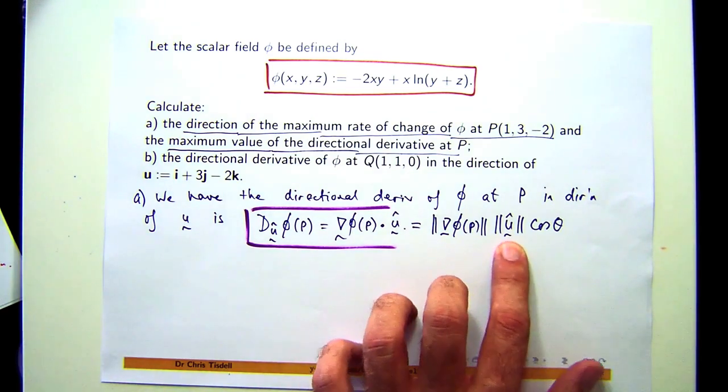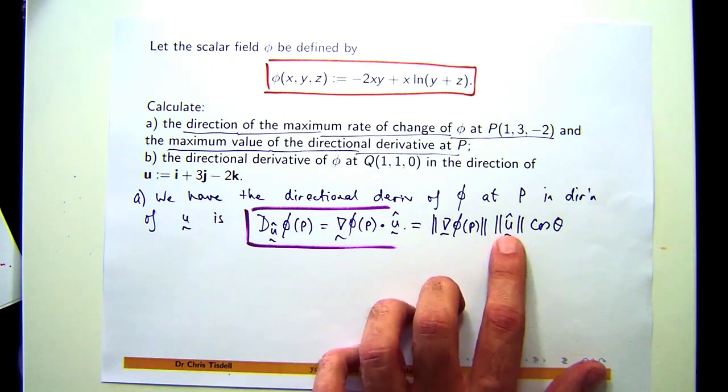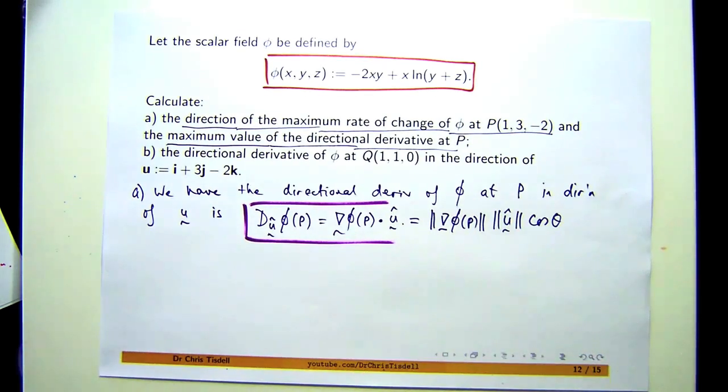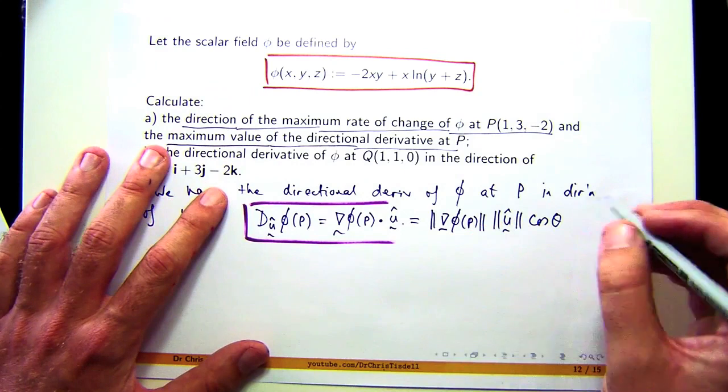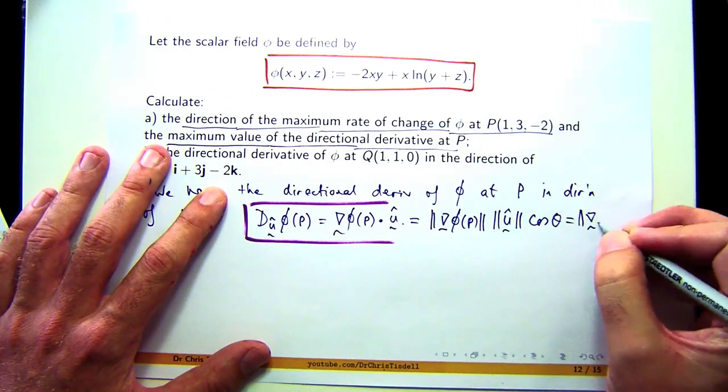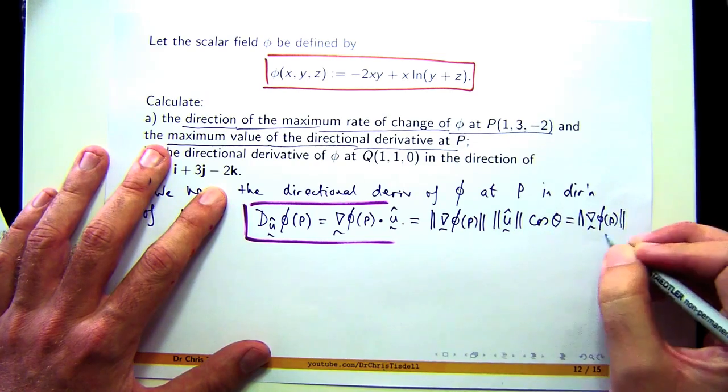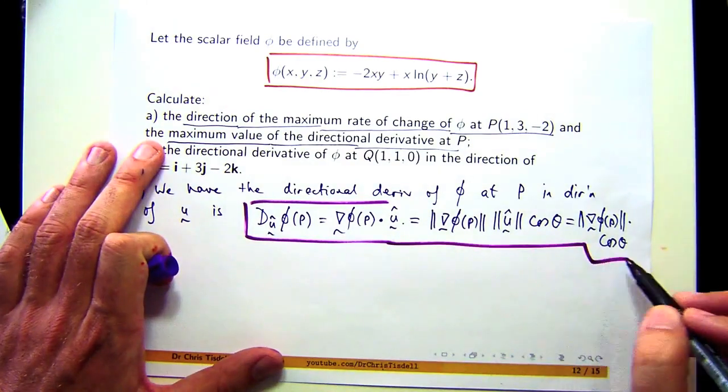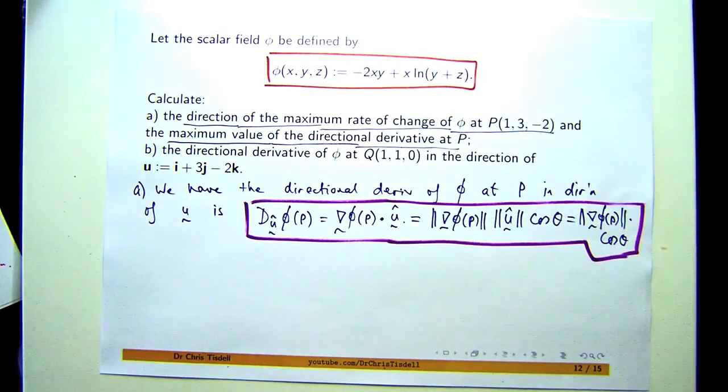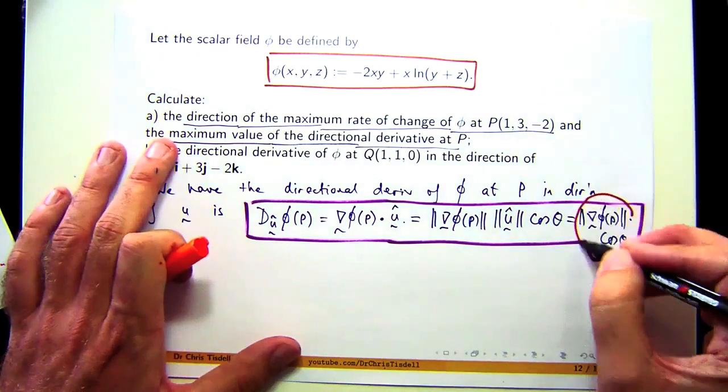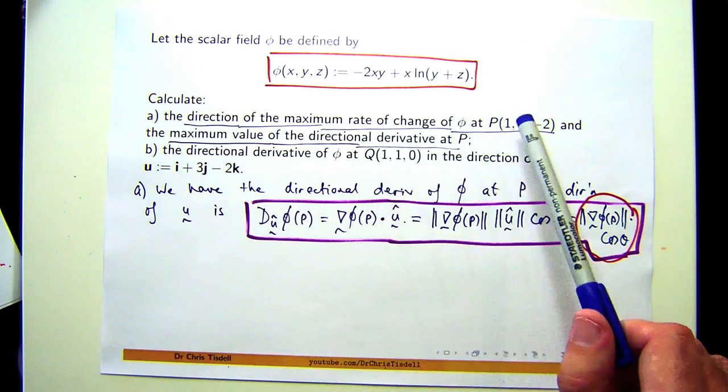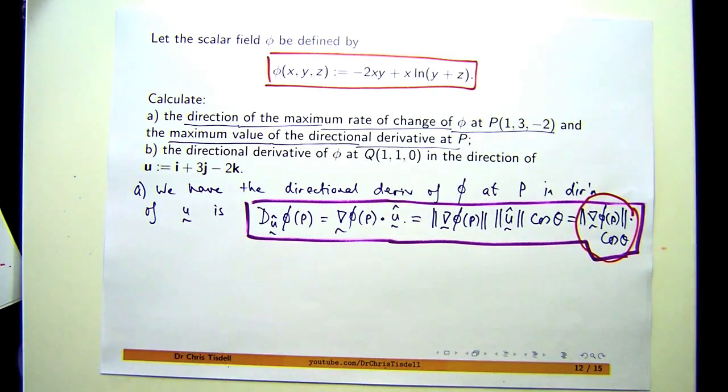Now, if I take the length of a vector that has length one, a unit vector, this is going to disappear. This is going to become one, because the length of a unit vector is always 1. Times cos θ. So this part now is really driving our investigation. The question is, what's the direction of the maximum rate of change of φ at this point? We can answer that now.